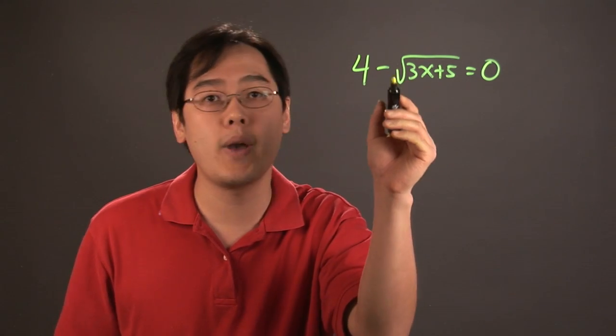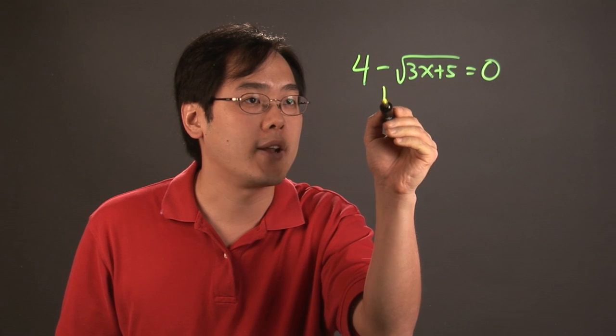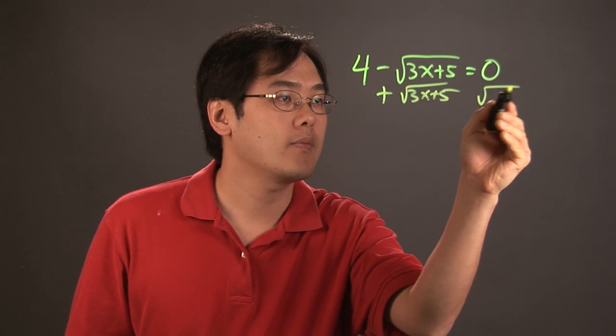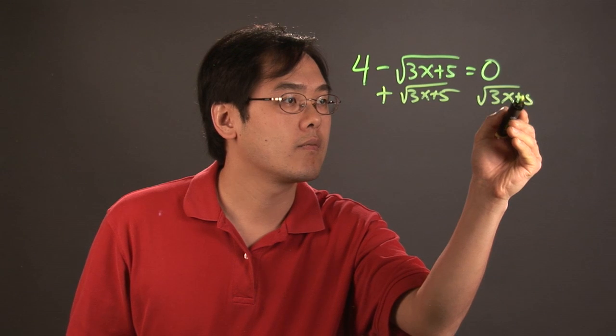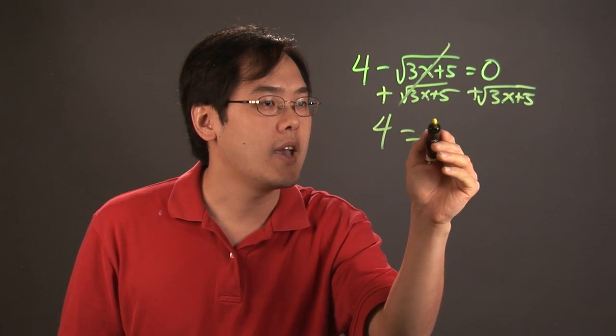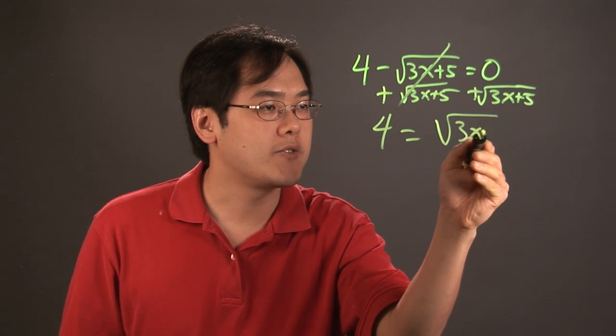So in this particular case, let's go ahead and, for example, add this radical over to the other side. So what you have here is 4 is equal to, this cancels, you have square root of 3x plus 5.